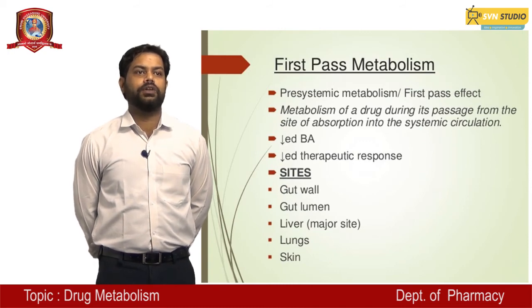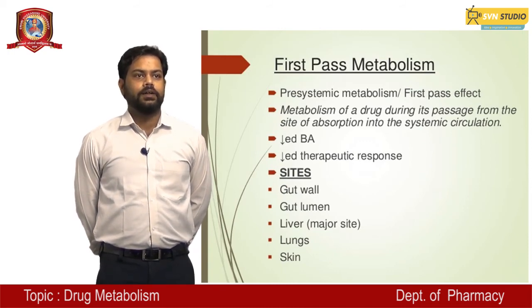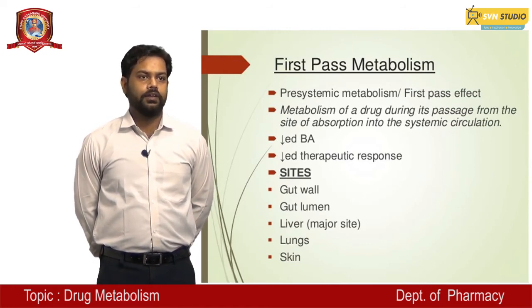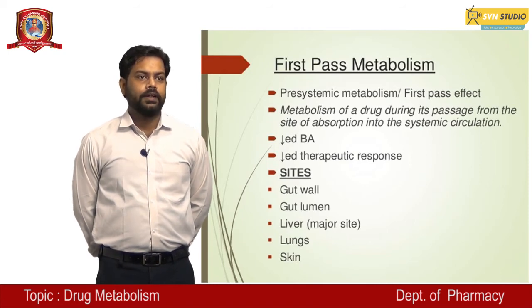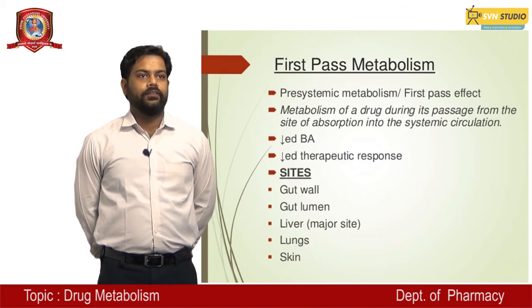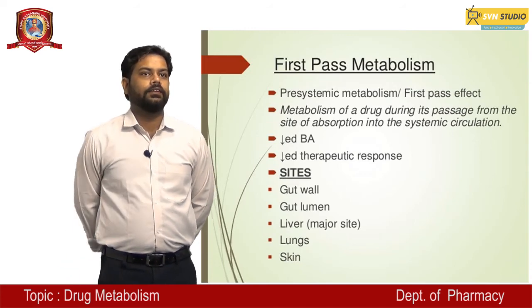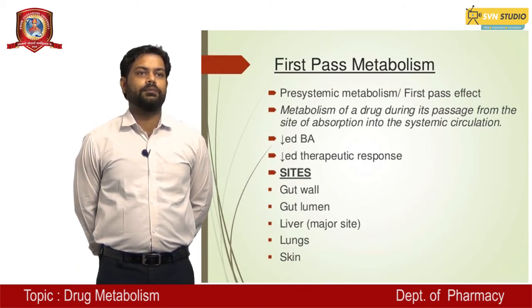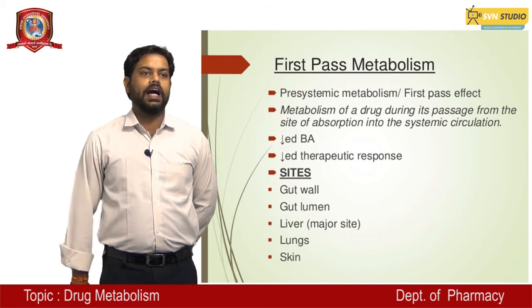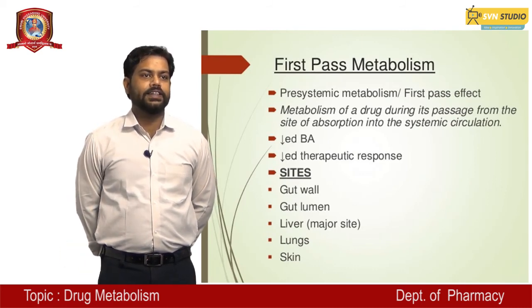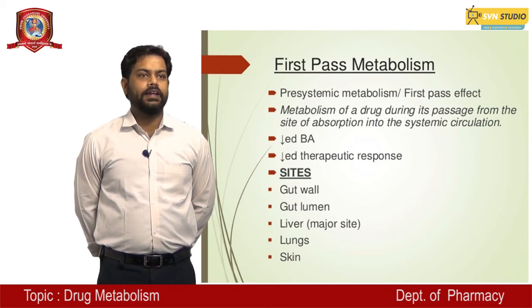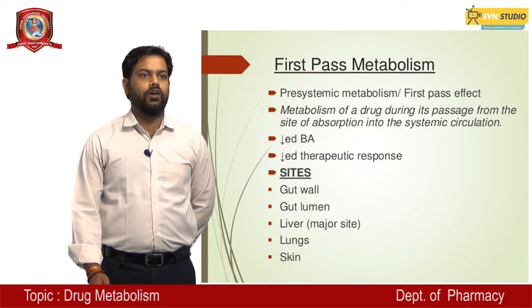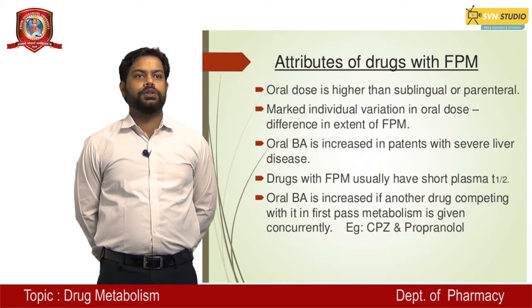First-pass metabolism, also called pre-systemic metabolism or first-pass effect: metabolism of the drug during its passage from the site of absorption into systemic circulation. This leads to decreased bioavailability and decreased therapeutic response. Sites include gut wall, gut lumen, liver (the major site), lung, and skin.